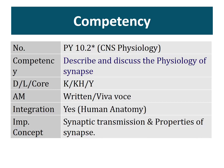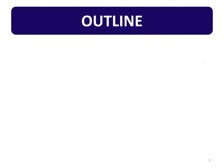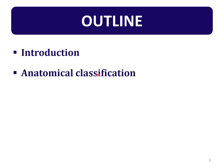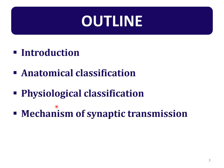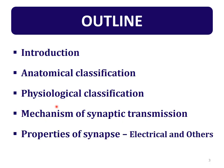In this session we will discuss the basics of the synapse. The outline is: first, the introduction — what is a synapse and how the term is derived; then the anatomical classification (structural) of the synapse; then the physiological classification (functional); the main part — mechanism of synaptic transmission; and properties of the synapse, which includes electrical properties and other properties, to be discussed in the next session.